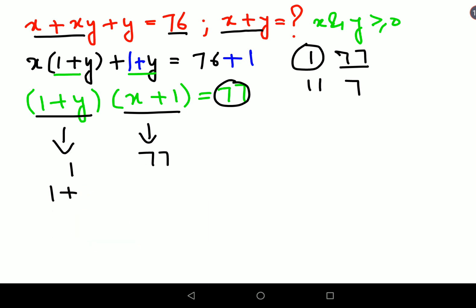So if 1 plus y equals 1, then y equals 0, which is not possible because the question states that both x and y are supposed to be positive. So obviously, these factors don't work in this scenario.